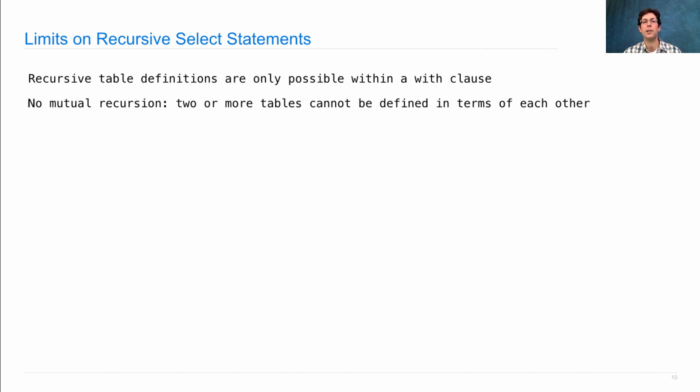So mutual recursion would have two tables defined in terms of each other. That's not allowed. You might imagine defining odds and evens, where odds is x plus 1 for everything in evens, and evens is x plus 1 for everything in odds. This seems reasonable from a logical standpoint, but it just doesn't work. You'll get an error that says that these are defined in terms of each other, and that's not allowed.